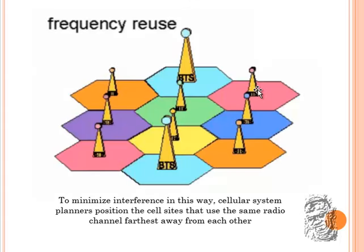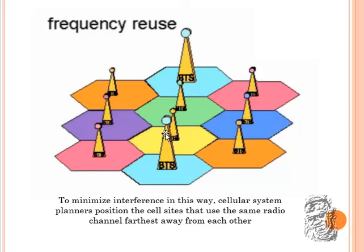Looking at the color code diagram, each one has base station controllers. The blue base station controller has sufficient distance between itself and the other blue one, as do the other colors. They cannot be placed too close together because it would cause electromagnetic interference between these signals. They must be at a specific distance when considering the concept of cellular reuse.